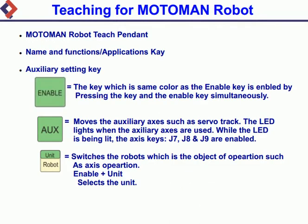Motoman Robot Teach Pendant — Name and Function/Applications. Auxiliary Setting Key: the key which is the same color as the Enable key, enabled by pressing the key and the Enable key simultaneously.